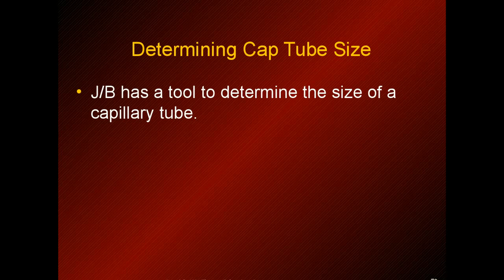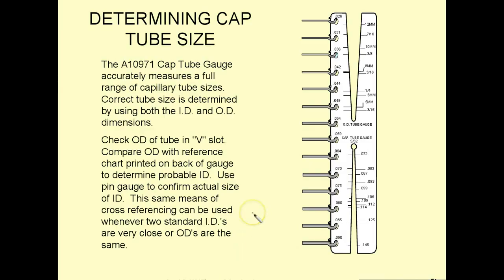If you can't find the size of the cap tube on a system, there are cap tube diameter checkers. You slide the checker over the tube to check the outside diameter, and use the little keys to slide into the cap tube to determine the inside size. That's it — about 15 minutes on the capillary tube metering device. Any questions, please email or get on the free student forum.